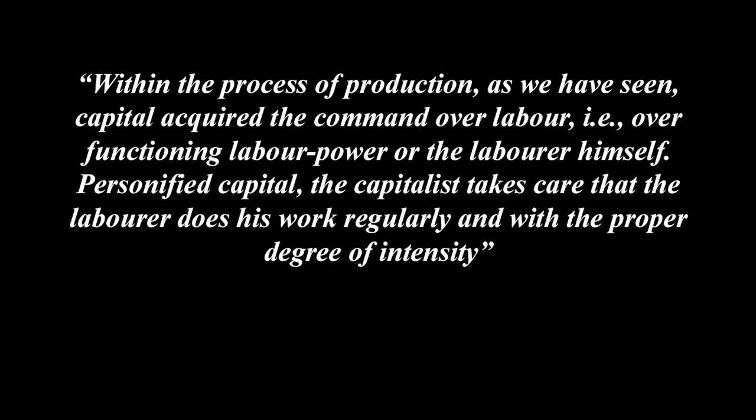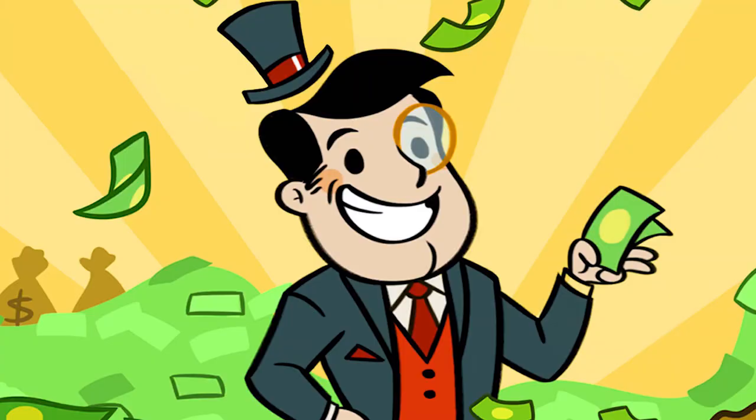Within the process of production, capital acquired the command over labour, i.e. over functioning labour power, or the labourer himself. Personified capital, a capitalist takes care that the labourer does his work regularly with the proper degree of intensity. Throughout this chapter, Marx also further defines what a capitalist actually is and briefly defines some necessary aspects of capitalism's formation. The term 'small master' or 'hybrid' is somewhere between labourer and capitalist — like those of the medieval trade guilds, it is a capitalist that also labours, such as the small business owner who employs a few people but is also directly involved in the labour process. A capitalist proper, however, is someone who is devoted to complete control over the labour process of others — essentially someone making money entirely off of other people's labour.